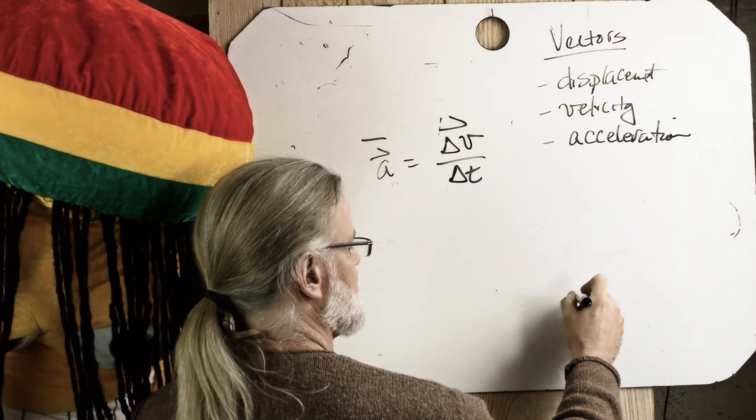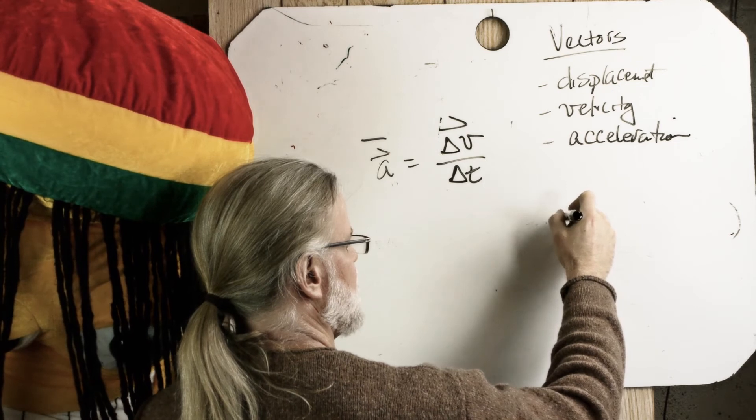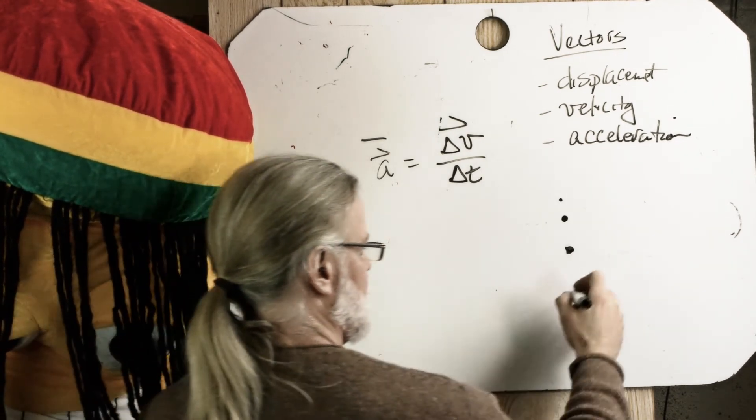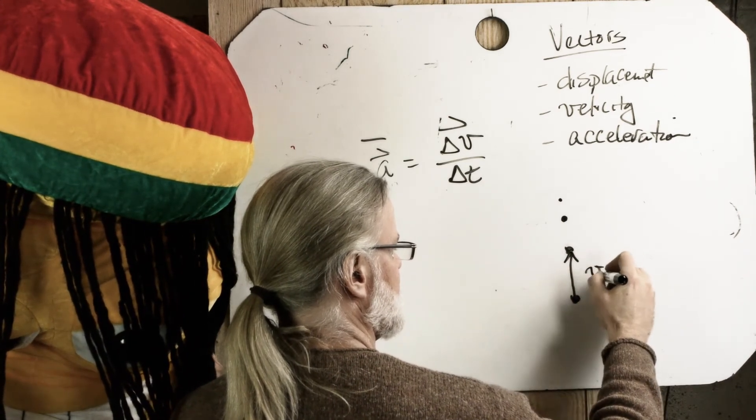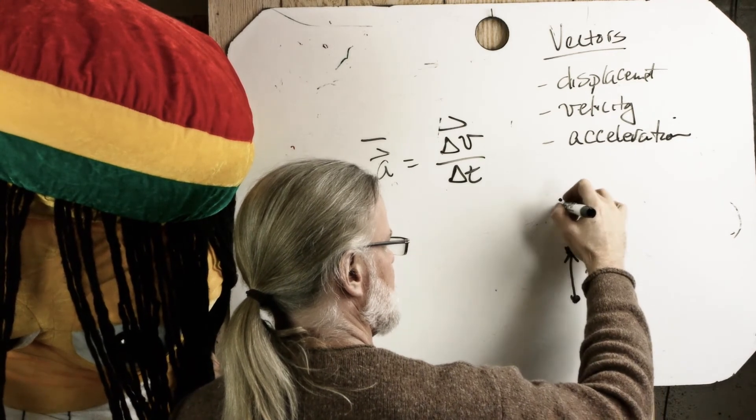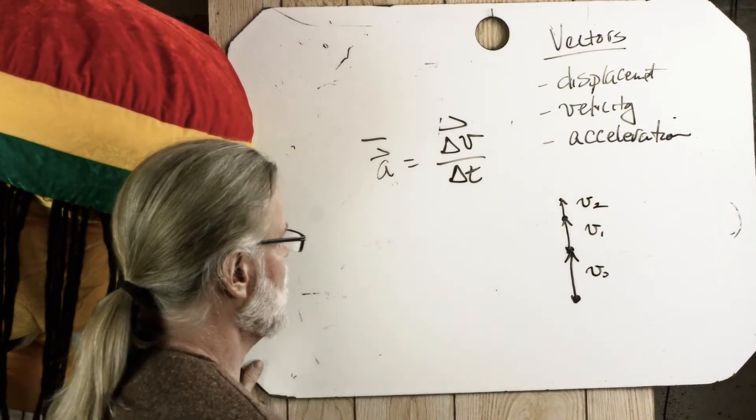Let's do a motion diagram. So it started off and it was going fast and then it's slowing down and getting slower doing something like that. So we had, call this V0 and we'll say it was slowing down later V1 and V2.